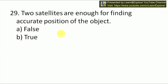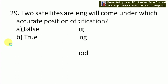Next question: two satellites are enough for finding the accurate position of an object — justify this sentence. This is obviously false. For finding the accurate position of any object, a minimum of four satellites is required. So our answer will be A — false.